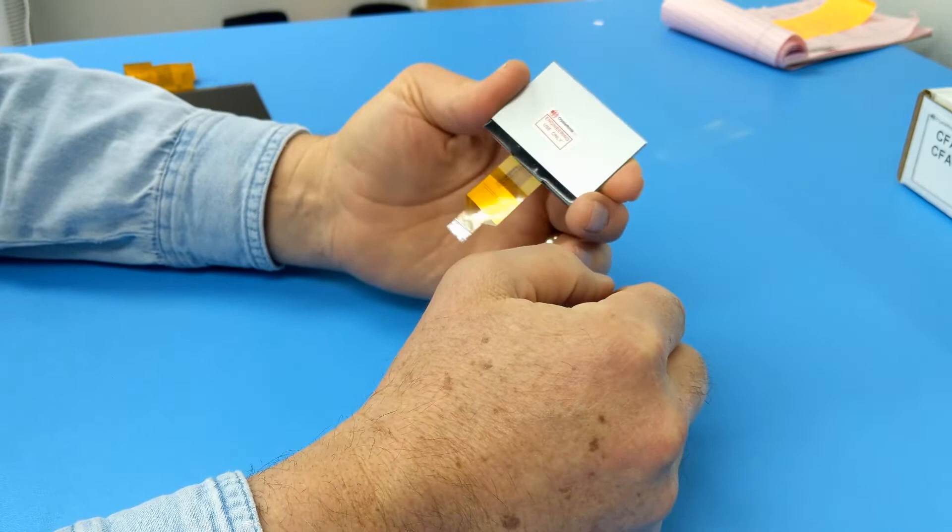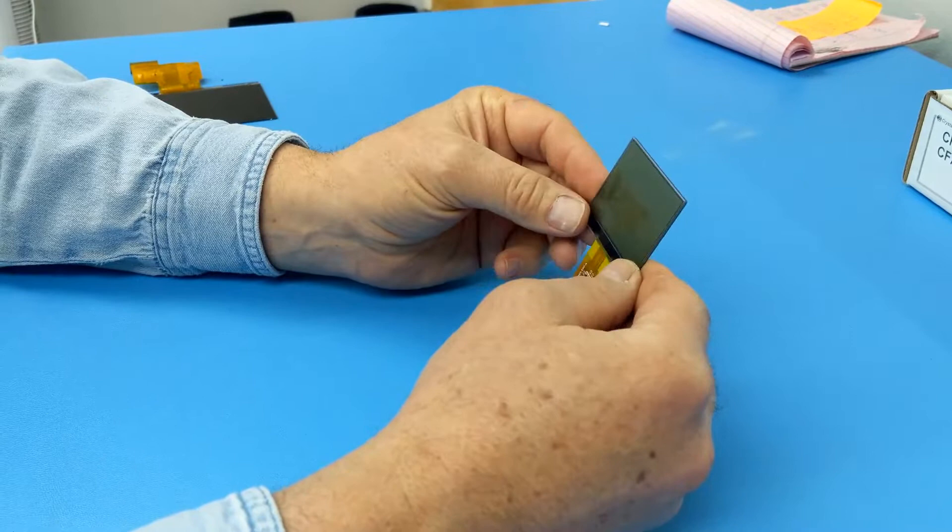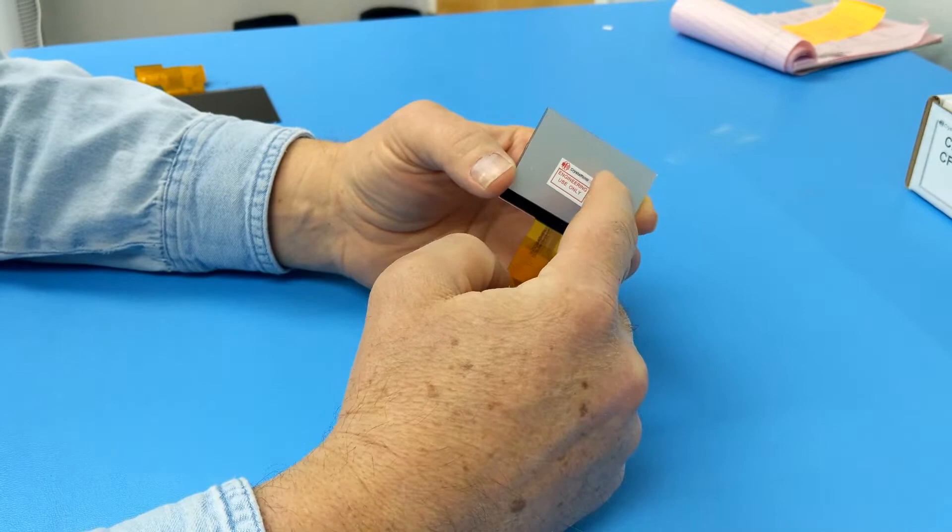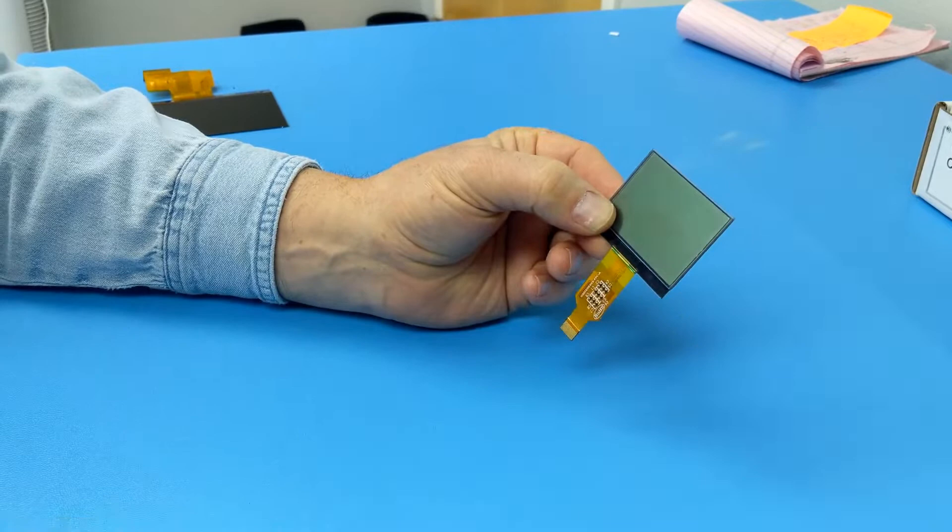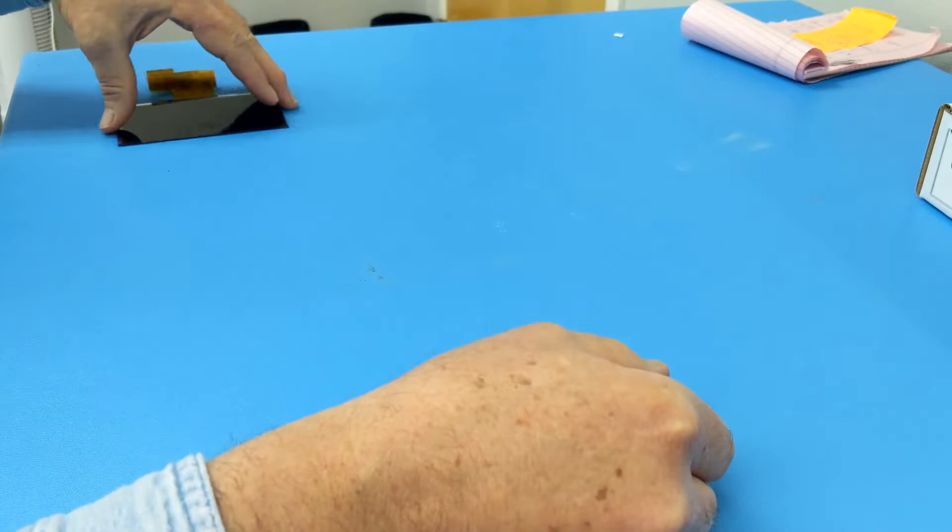So what you need is, we'll put the part number of this in, it's like a CFA-X128 something, I think it's got a U3 in the end of the part number. It's basically a little thin chip-on-glass display that has a back transflective polarizer and a front transmissive polarizer. The other thing you're going to need is some scrap display which we have plenty of here.